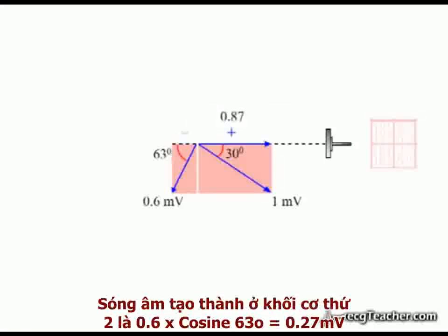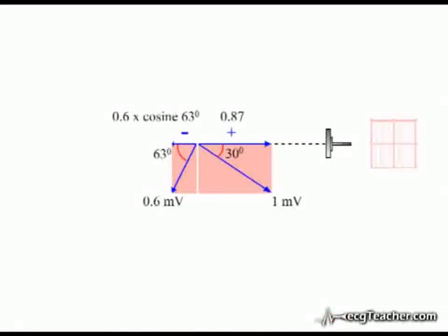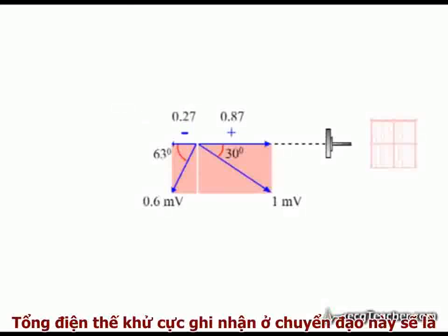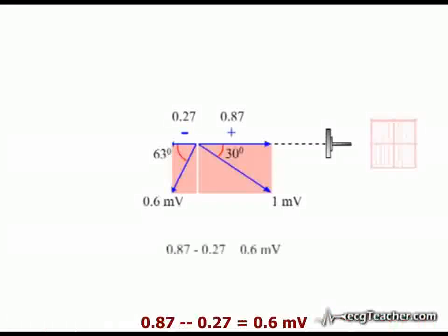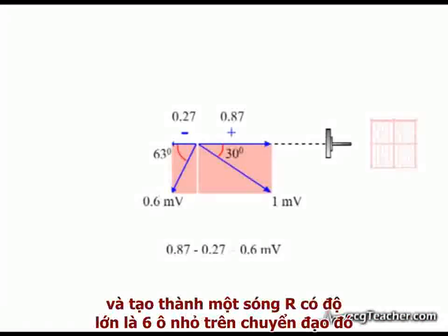While the negative signal is 0.6 millivolts multiplied by the cosine of 63 degrees, this works out at 0.27 millivolts. The total depolarizing signal recorded by the lead is therefore 0.6 millivolts — a positive overall signal producing a strong Q-wave of 6 small squares in our model readout.